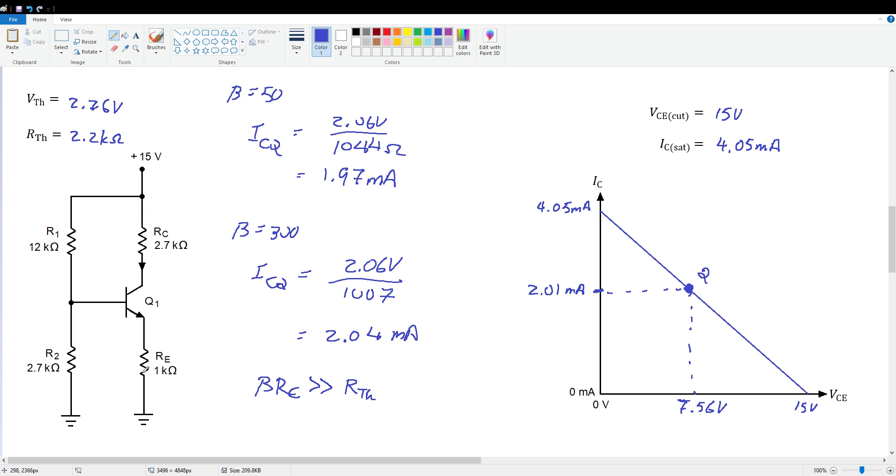And remember, that's because beta times RE was very big compared to RTH. If we assume beta is 100, 100 times RE is 100K ohms and RTH was 2.2K ohms. And that does meet this inequality. In fact, it's a 45 to 1 ratio. So we've met this inequality by a factor of 45. That's pretty good. Our change in collector current for a beta from 50 to 300 is only plus 3.6 percent. That's pretty beta independent.